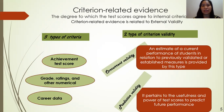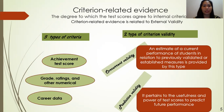Concurrent validity is an estimate of a current performance of students in relation to previously validated or established measures. Predictive validity pertains to the usefulness and power of test scores to predict future performance.